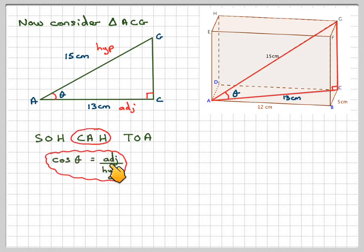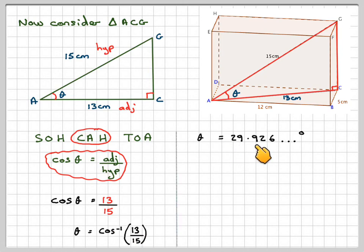Write down the ratio. Cos θ is adjacent over hypotenuse. So cos θ will be the adjacent side, which is 13, divided by the hypotenuse, which is 15. Therefore θ will be cos to the minus 1 of 13 over 15. θ will be equal to 29.926 degrees, which is equal to 29.9 degrees to 3 significant figures.